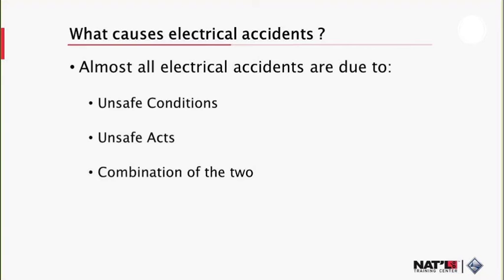Electrical accidents are typically caused by one or a combination of three possible factors: work involving unsafe equipment and installations, workplaces made unsafe by the environment, and unsafe work performance, known as unsafe acts. The first two factors are sometimes considered together and simply referred to as unsafe conditions. Thus, electrical accidents can generally be considered as being caused by unsafe conditions, unsafe acts, or in what is usually the case, a combination of the two.